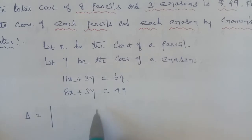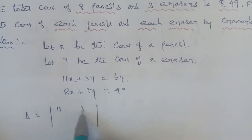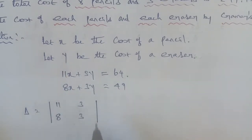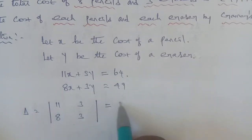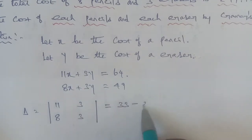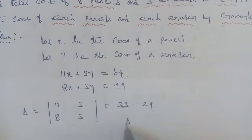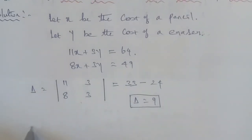By using Cramer's Rule, first we find delta. Delta is equal to the determinant with coefficients: x-coefficient of first equation is 11, y-coefficient is 3; x-coefficient of second equation is 8, y-coefficient is 3. Applying the determinant: 11 into 3 is 33, minus 8 into 3 is 24, so delta equals 33 minus 24, which is 9.